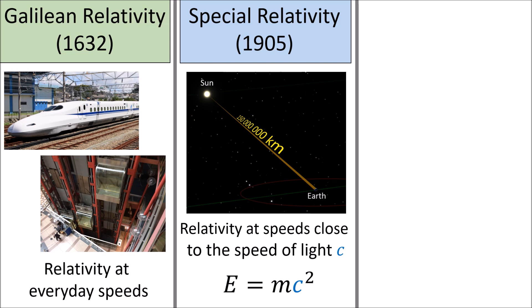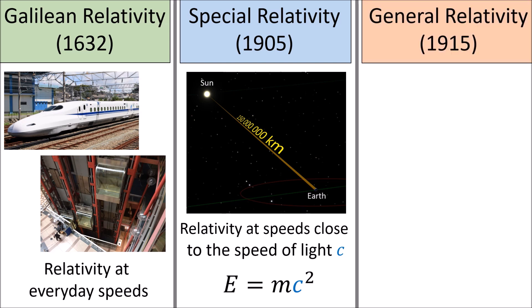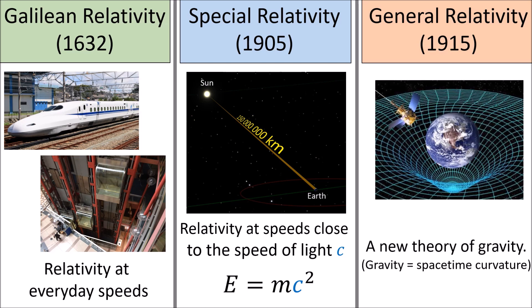The famous equation E equals mc squared is a result from considering physics in special relativity. Finally, in 1915, Einstein published a generalized version of special relativity called general relativity. General relativity is a new theory of gravity that replaces Newton's older theory of gravity, and it treats gravity geometrically, saying that gravity is the result of spacetime curvature.